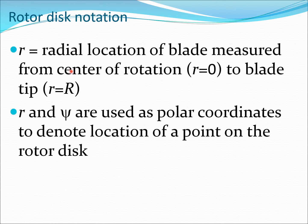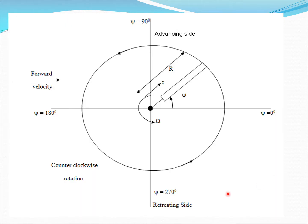The radial location of the blade is measured from the center of rotation at r equals zero to the blade tip at r equals capital R. R and psi are used as polar coordinates to denote location of a point on the rotor disk. Returning back to our diagram, if we were to use Cartesian coordinates in terms of x and y, you would have more complexity. Polar coordinates are very suitable for any problem based on a circular system, and here you have a clear circular system.